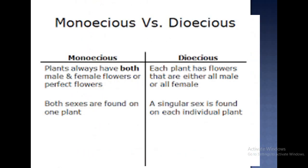Now we will see what is monoecious and what is dioecious. 'Oecium' means house, 'mono' means single, and 'di' means two. Here we are discussing staminate or pistillate flowers, that is, unisexual flowers. If a plant has both the male and female flowers on the same plant, then such a plant is known as a monoecious plant.